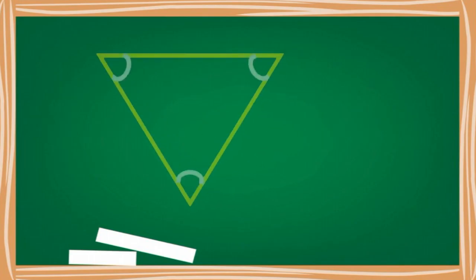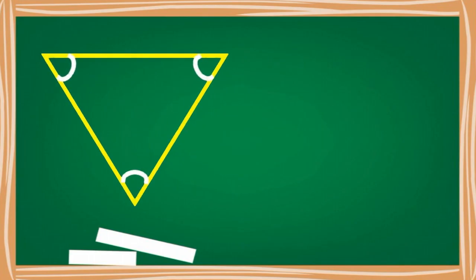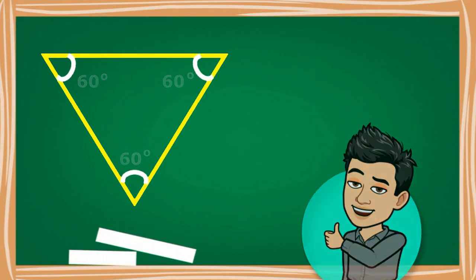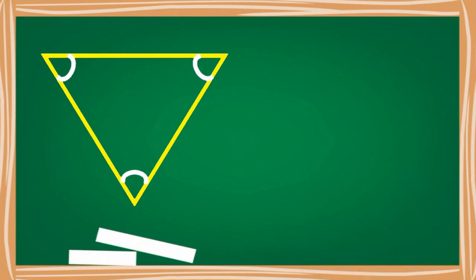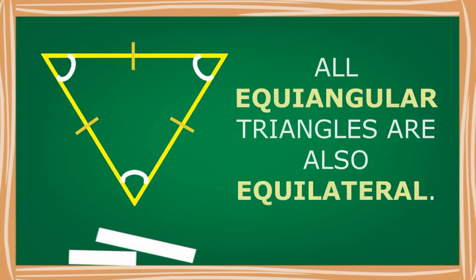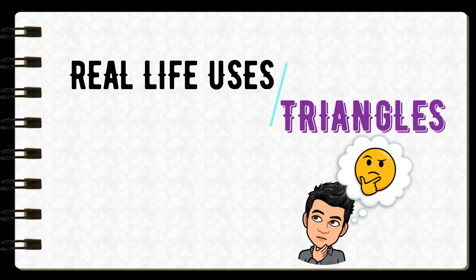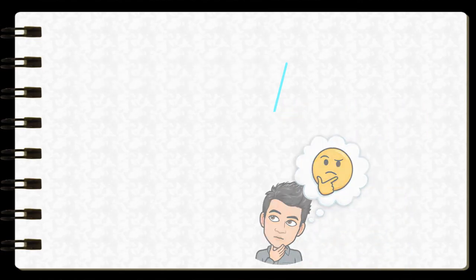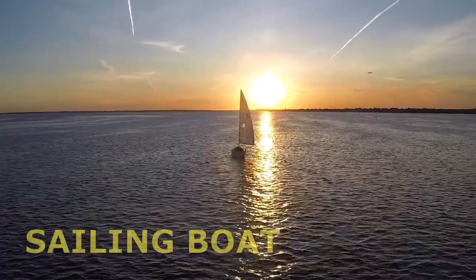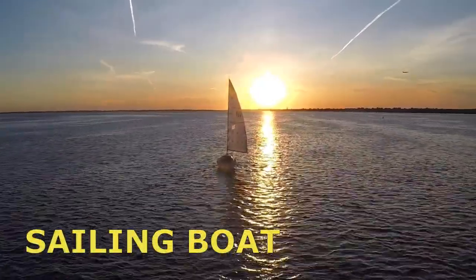So in an equiangular triangle, each angle measures 60 degrees. In addition, always remember that all equiangular triangles are also equilateral. So now, what are the real-life uses of triangles?